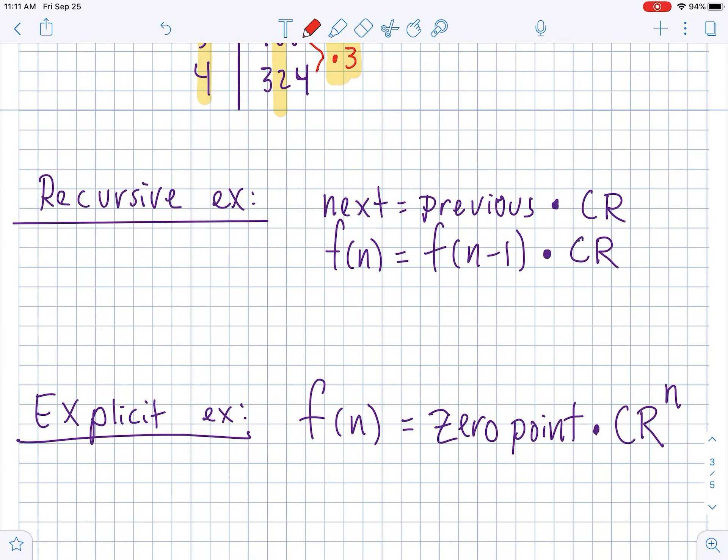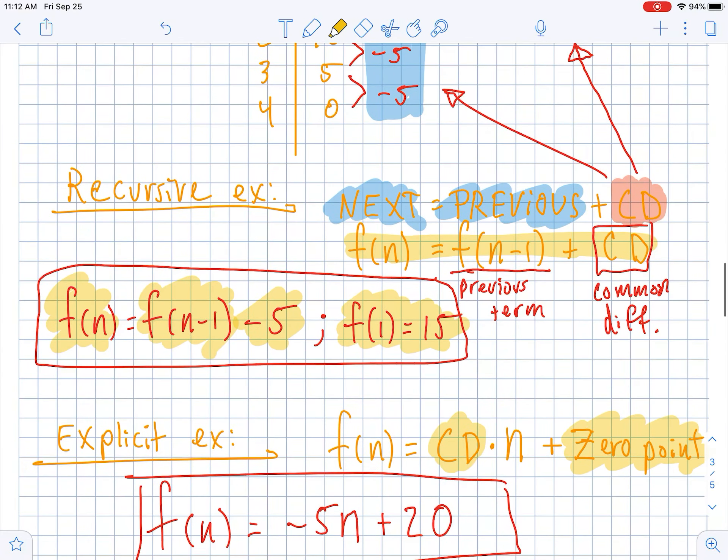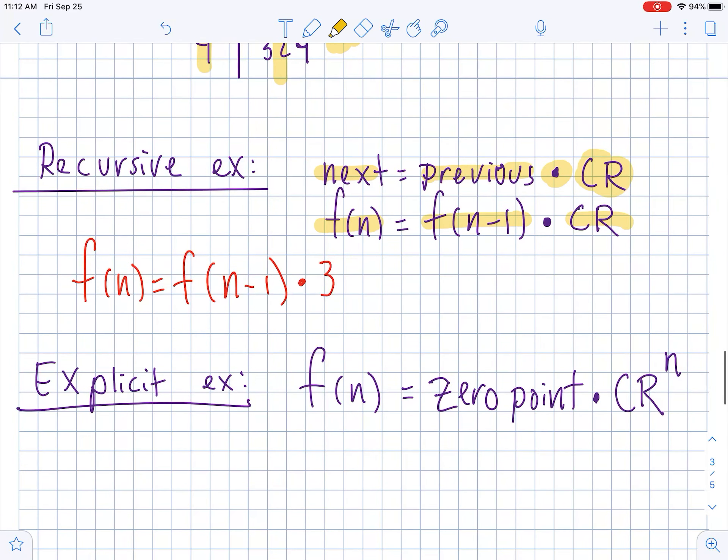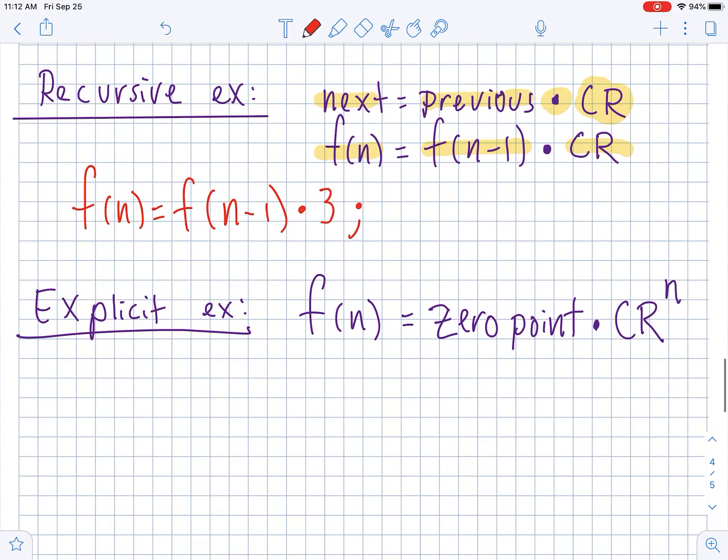To put that into a recursive definition. Recursive definition for geometric sequence is very similar to the arithmetic. It still is like the next term is the previous term, but instead of adding the common difference, you multiply by the common ratio. So each term is the previous term multiplied by the common ratio. So for our function, they were getting multiplied by 3. So each term is the previous term multiplied by 3. But just like with the arithmetic, you need to have a first term. Every recursive definition should have a starting term. So in the table, day one was 12. So f of 1 is equal to 12.